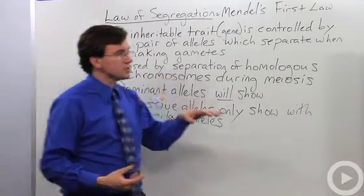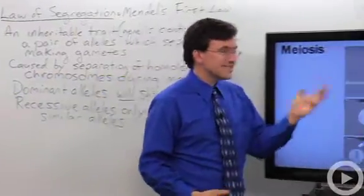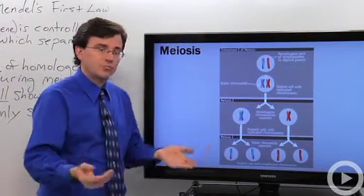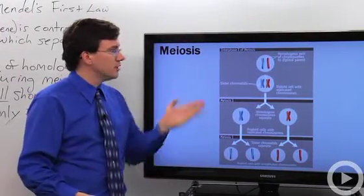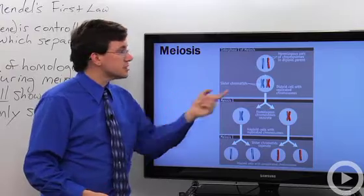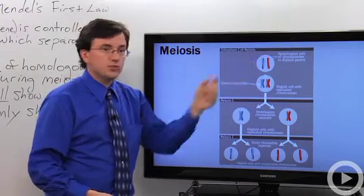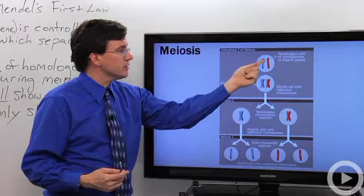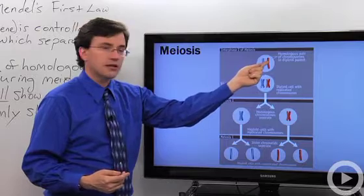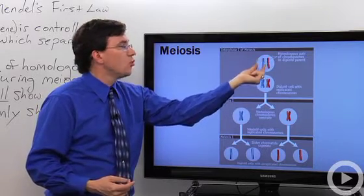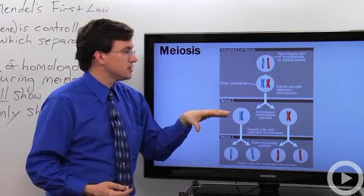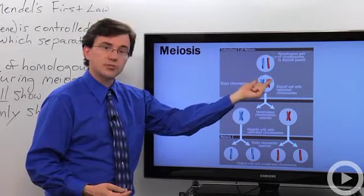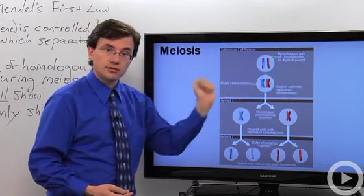Looking at this diagram, you can see how this process comes about. In meiosis, if you begin with two chromosomes carrying the same gene on each homologous chromosome, when it undergoes the S stage of the cell cycle, you wind up with pairs of chromatids joined together at the centromere.